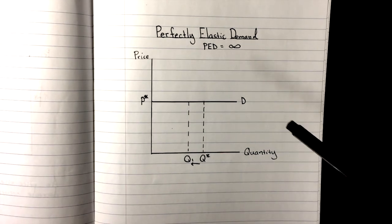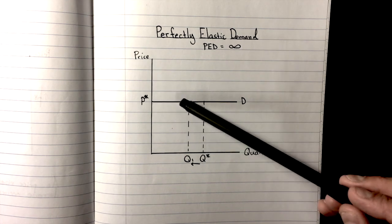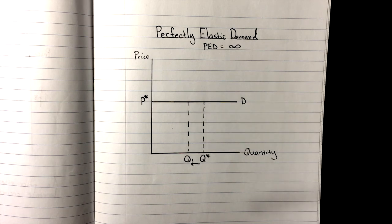We have perfectly elastic demand, which is a totally flat and completely horizontal demand curve, which ultimately the price does not change at all and all quantities are supplied at a given price.